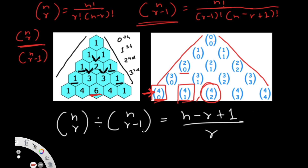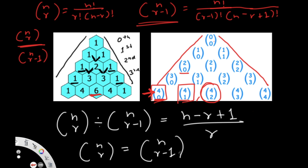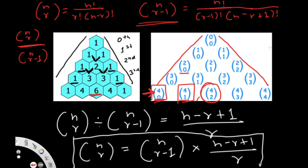Rearranging, the final formula is: nCr = nC(r−1) × (n − r + 1) / r. In other words, the current element equals the previous element multiplied by (n − r + 1) divided by r. You can test this with any values in the triangle to verify. Once you understand this theory, the code is the easy part.